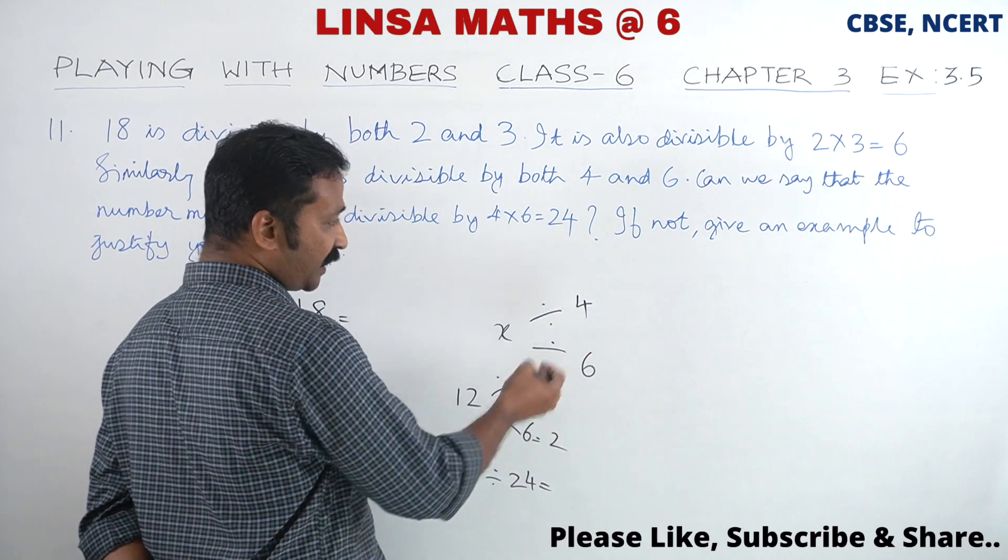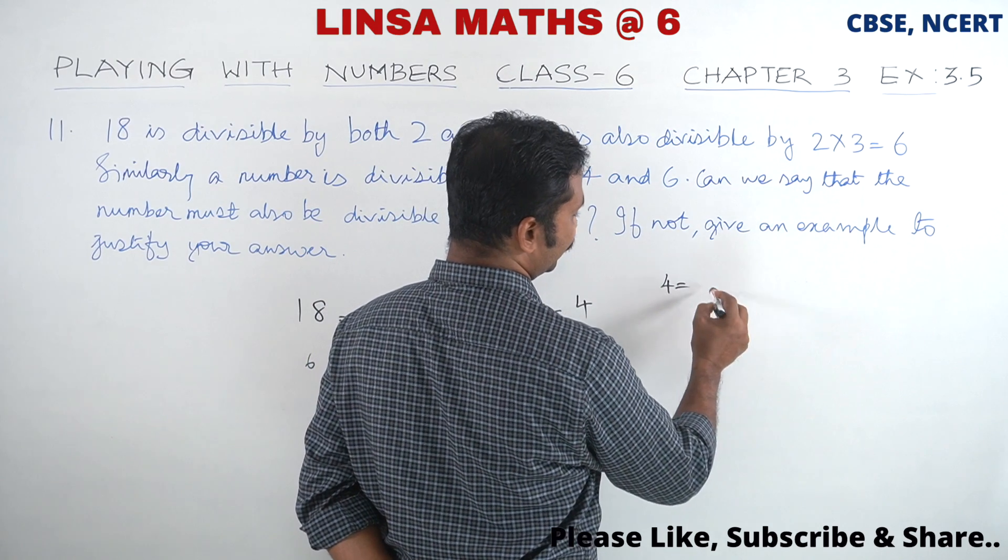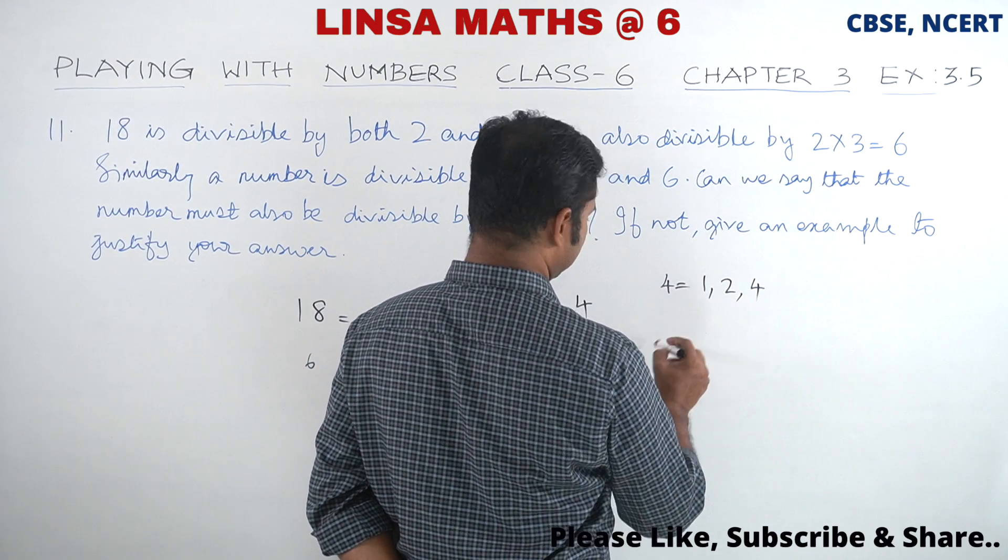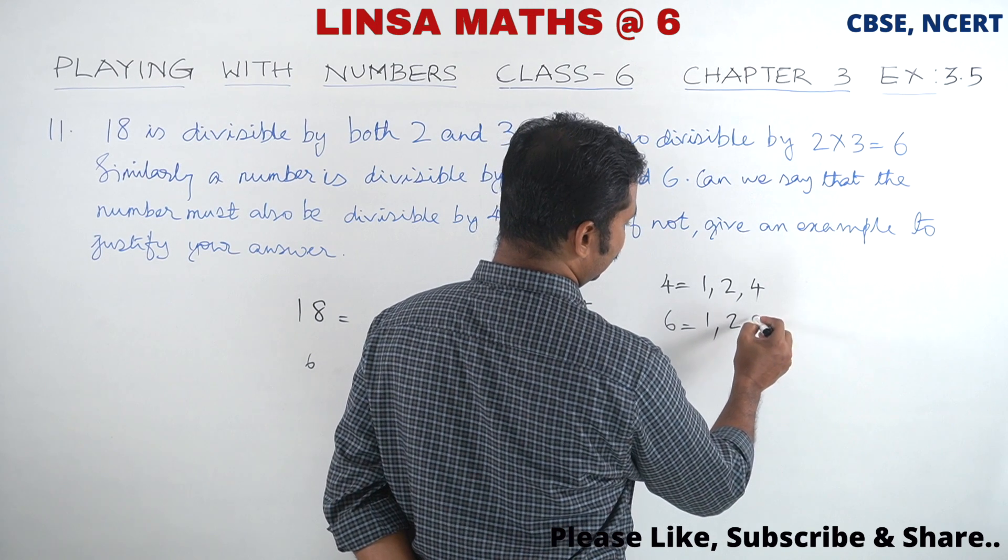The HCF of 6 and 4 is 2. So 4 and 6 are not co-prime numbers.